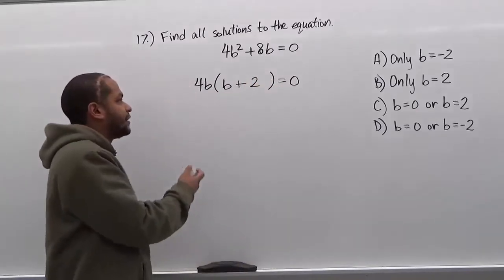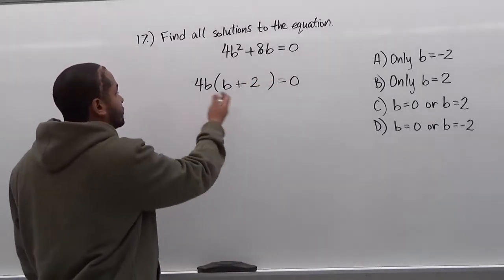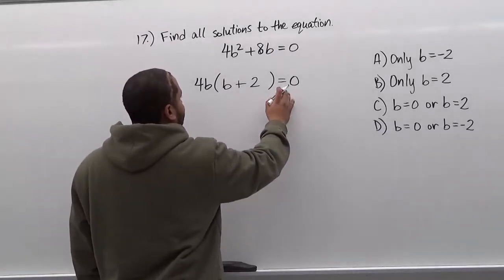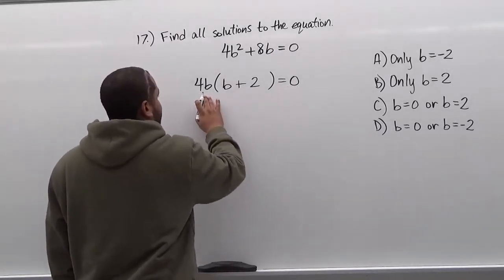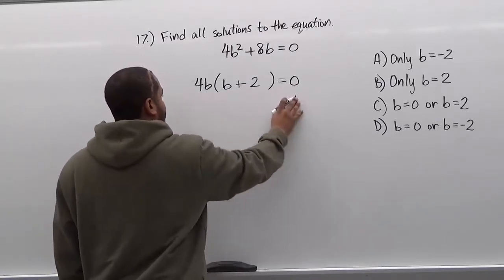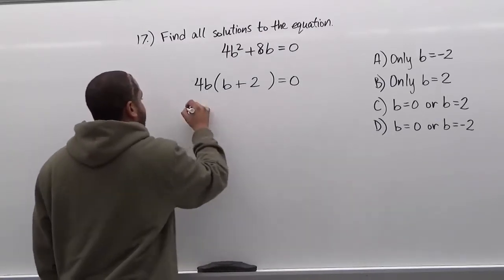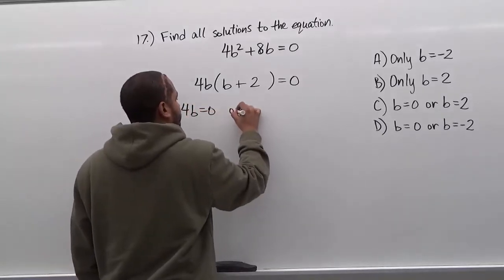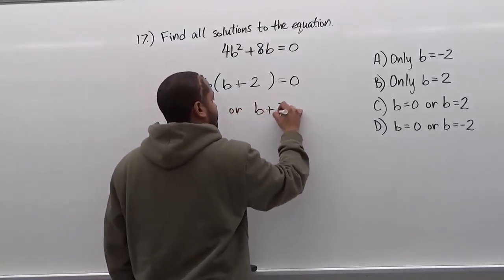Now once we get here, we're in a safe zone. We have a product of two numbers that give us a value of zero. So if 4b times b plus 2 equals zero, either 4b is zero or b plus 2 is zero. So we have 4b equals zero or b plus 2 equals zero.